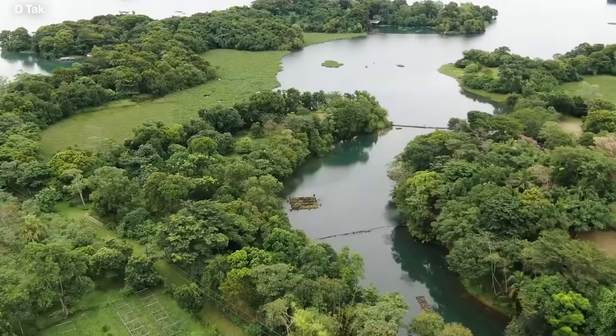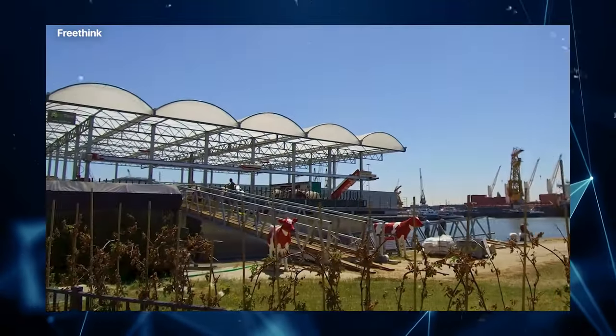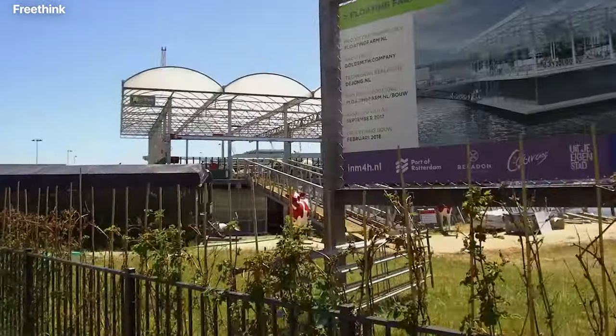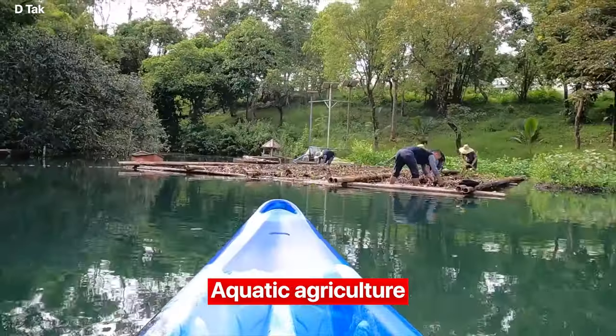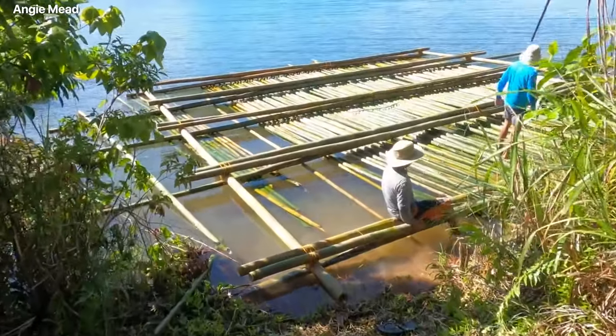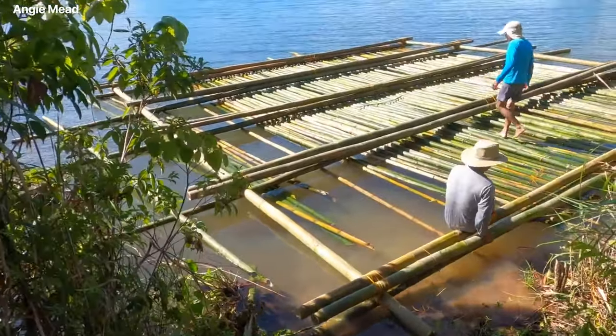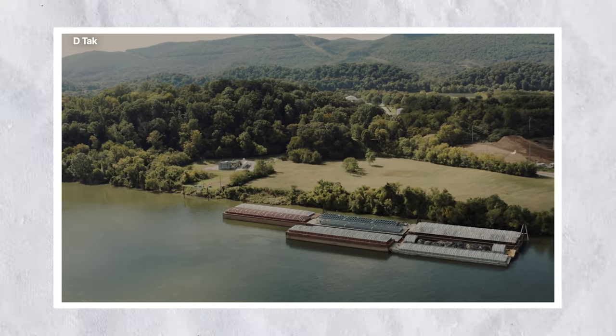Floating farms. A floating farm is an agricultural system developed and operated on a water body like an ocean, lake or river. This phenomenon is also known as floating agriculture, aquatic agriculture, and aquaculture. Floating farms provide a sustainable solution to food insecurity and environmental degradation by utilizing unused water resources.